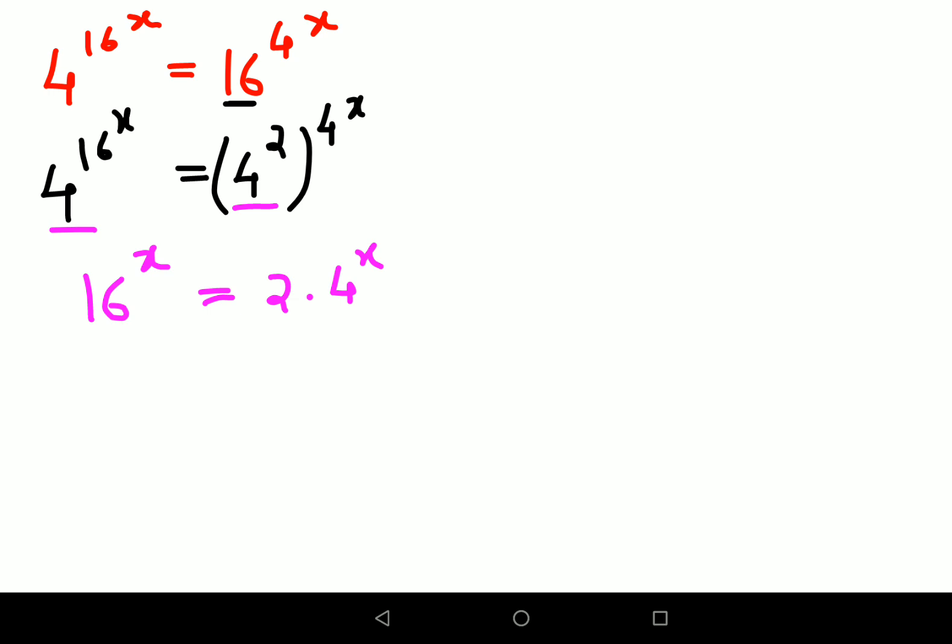Now, to find the value of x, I'm going to shift all the x's on one side and keep the numbers on the other side. So this will cancel and I have (16/4)^x = 2.